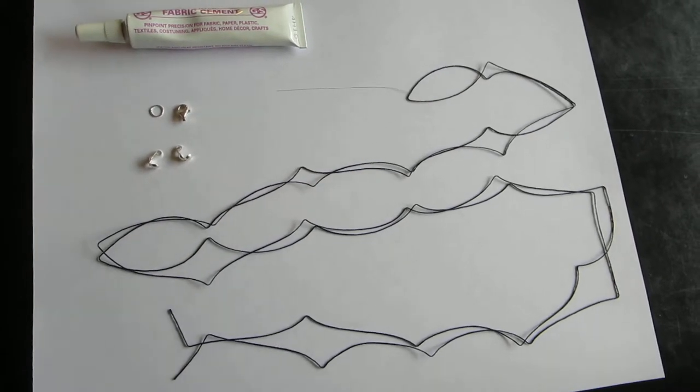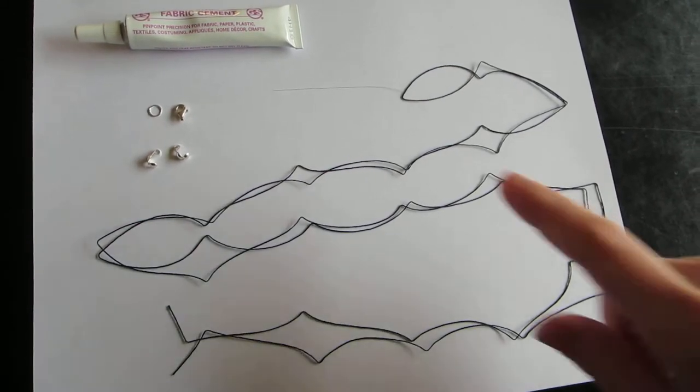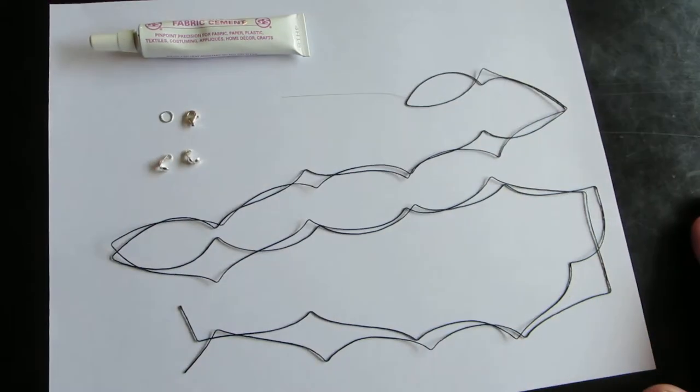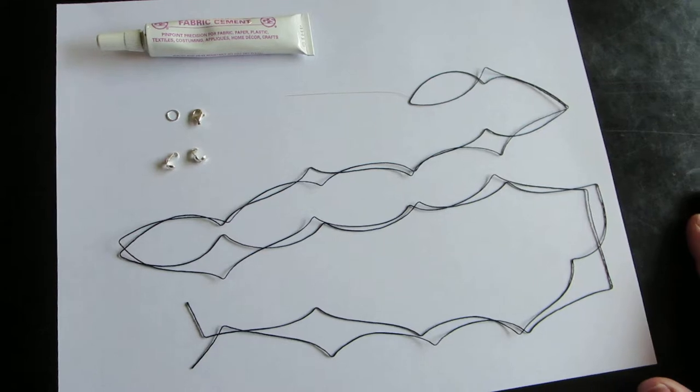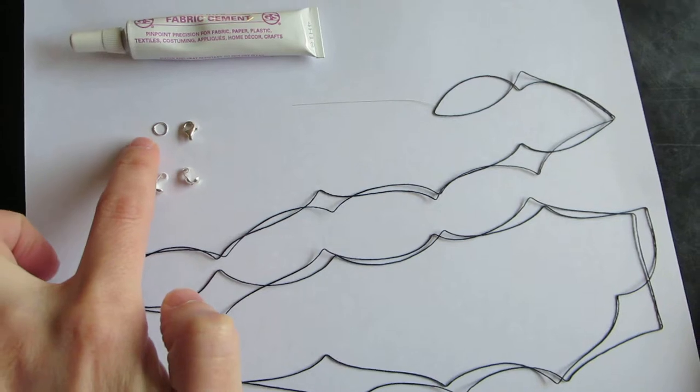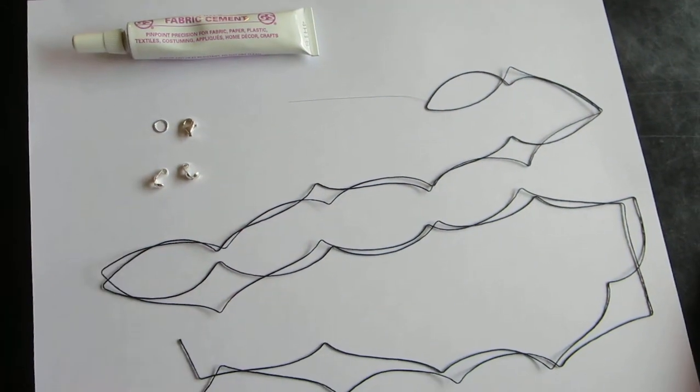I'm going to teach you how to start the pearl necklace. The first step is to put your needle on the thread, which I have done already right here. The second step is to put on the clamshell. That's the part right here that will be attached to both the lobster claw and the ring in the last steps of making your necklace.